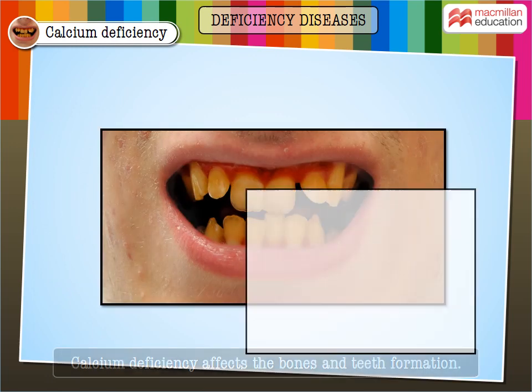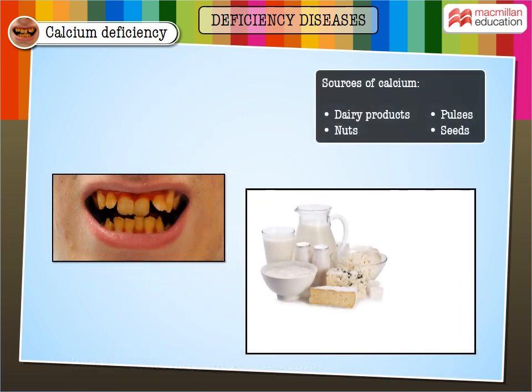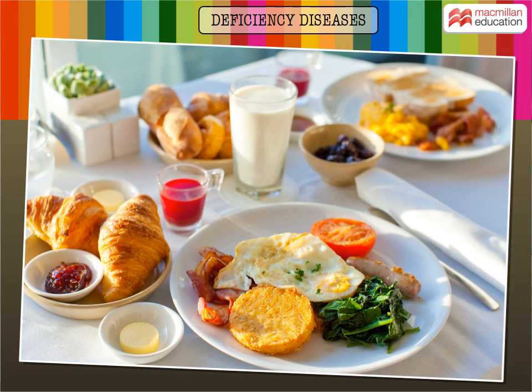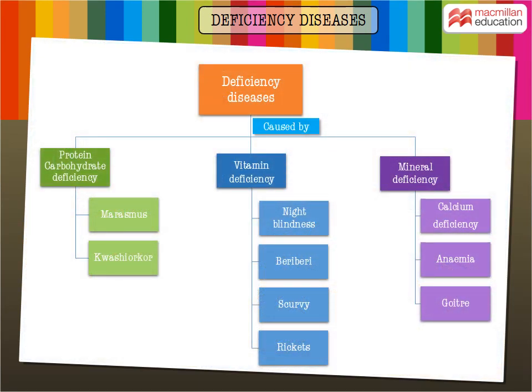Calcium deficiency affects the bones and teeth formation. Dairy products, pulses, nuts, and seeds are good sources of calcium. Deficiency diseases can be prevented by healthy eating — we should eat a balanced diet that gives us all the nutrients that our body requires.